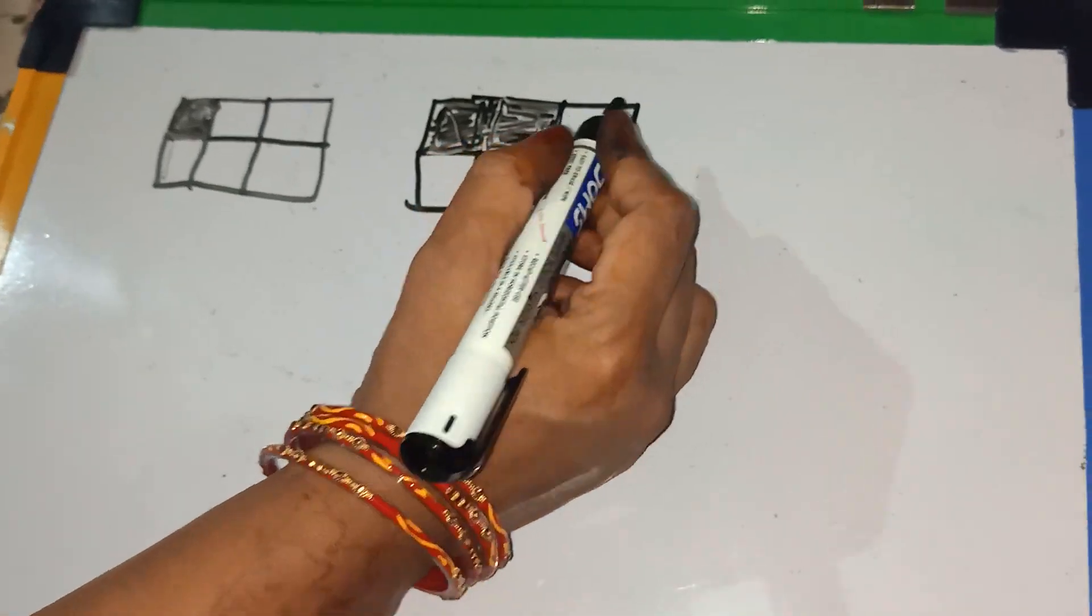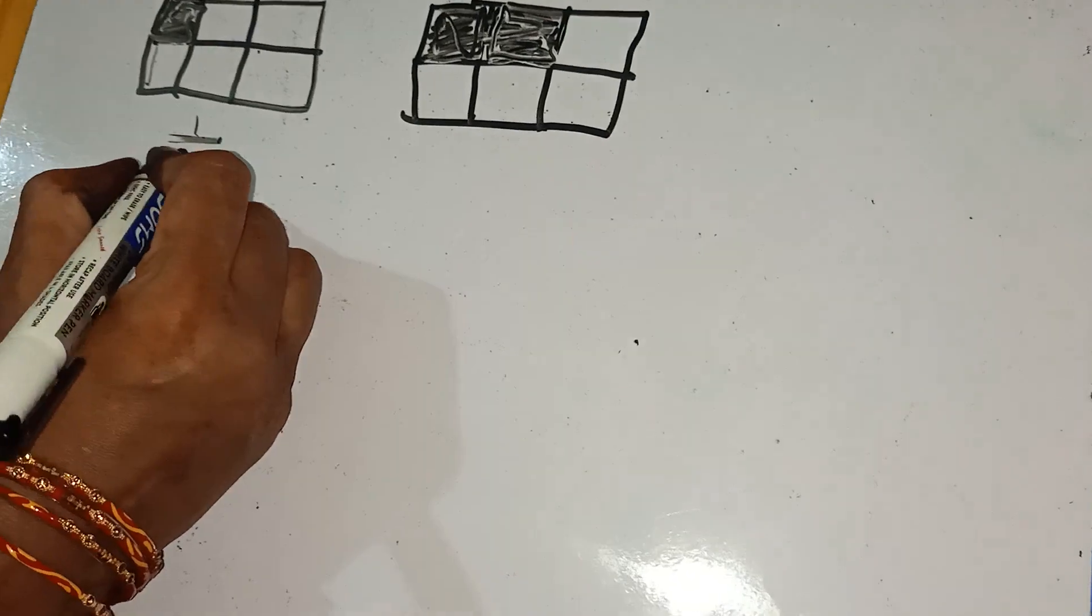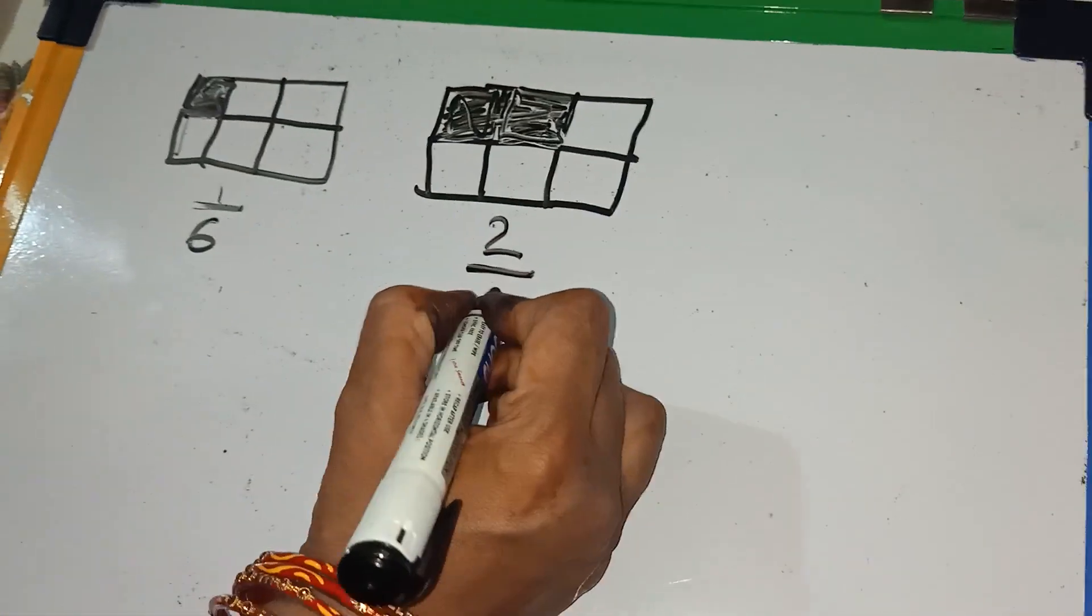So, how can we write in fractions? Children, you know. We can write 1 by 6. And for this, we can write 2 by 6.